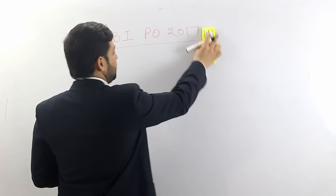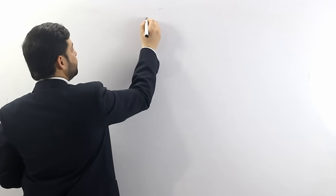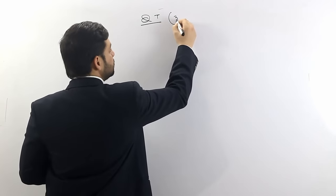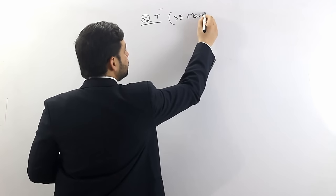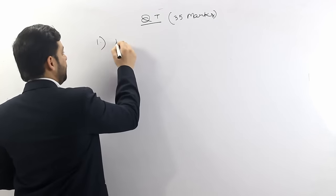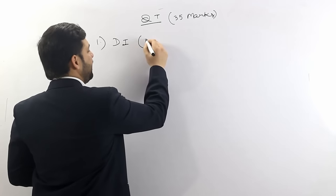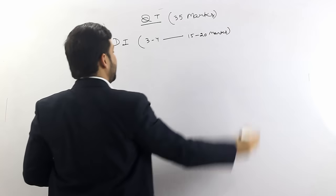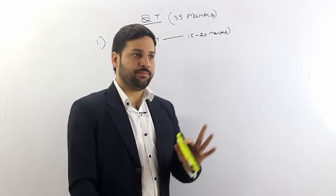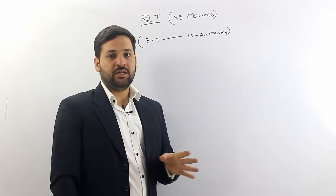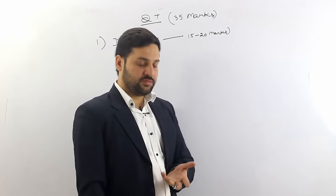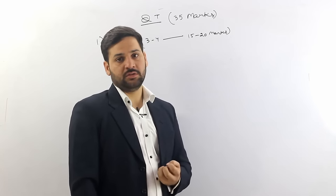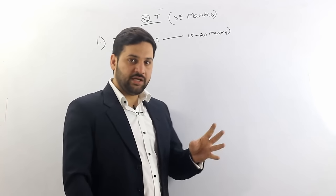Let us discuss about quantitative aptitude — the QT section. In QT, 35 marks are there and there is data interpretation. There will be 3 to 4 sets, and about 15 to 20 marks will be allotted to them. Don't expect simple one-diagram questions like a simple pie chart or simple table. There will most probably be double diagrams with sets, and there will be questions like missing figures — very important — where some figures will be missing and you need to find those figures.